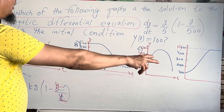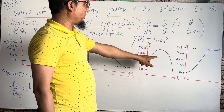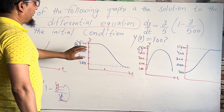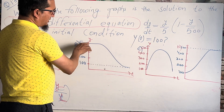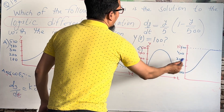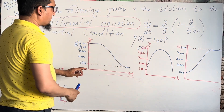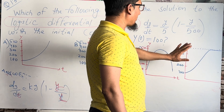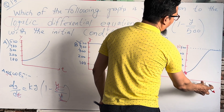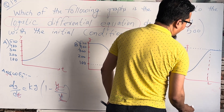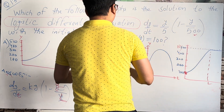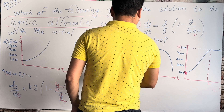Graphs A and C are wrong — A looks like an exponential over a specific interval, and C looks like an inverted quadratic, neither is logistic. Graph B shows decay — it decreases and then becomes constant. Graph D shows growth: starting from y = 100 when t = 0, increasing up to a maximum of 500, then becoming a constant horizontal line. This matches all conditions, so the answer is D.